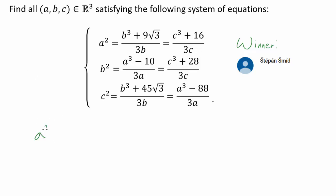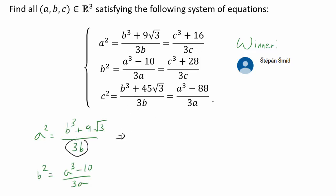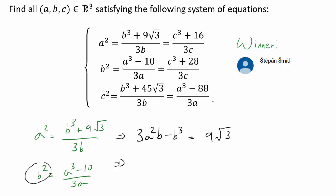To begin, let me write down the two equations we wish to focus on. Rewriting the first one — we don't want anything in the denominator — multiplying both sides by 3B gives us 3A²B minus B³ equals 9 times the square root of 3. For the second equation, multiplying both sides by 3A gives us A³ minus 3AB² equals negative 10, after moving terms over.